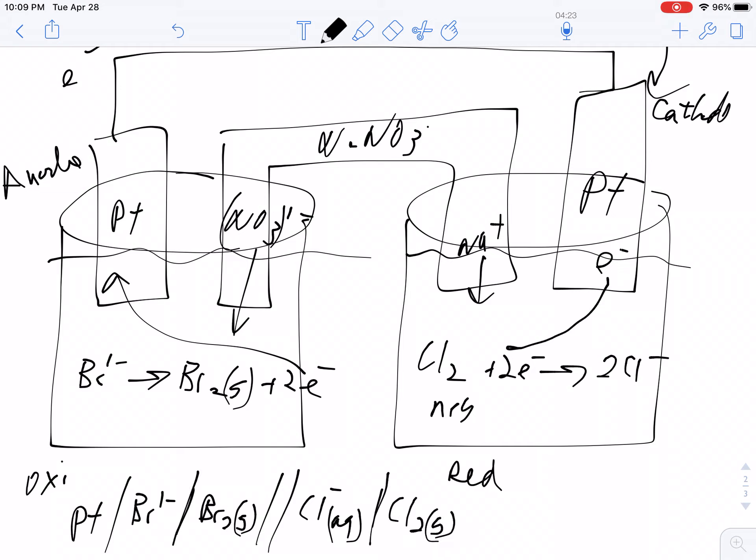So a single line means a phase separation, so aqueous is different than gas. That's why the gas is separate from the aqueous. And then you've got your electrode. You always go from anode to cathode. That one actually went pretty quick.